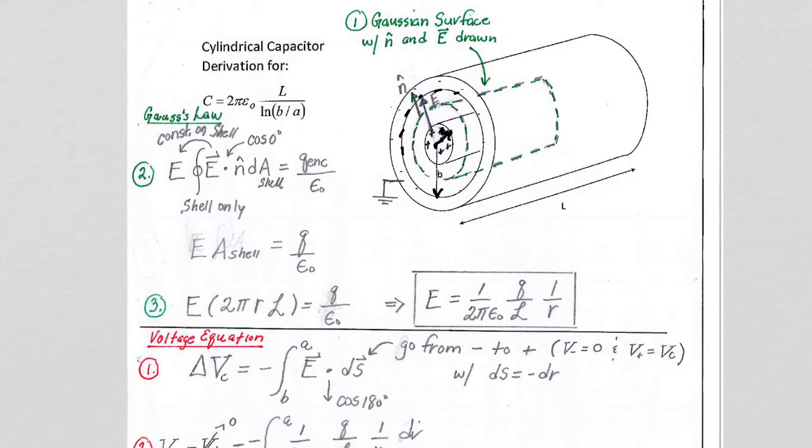Our gaussian surface goes in between the positive and the negative charge. It's a cylinder coaxial, so we've seen this before. The electric field points radially out like the spokes on a wheel. The n hat for the shell points radially out, so that's our cosine of zero degrees that we have shown here.